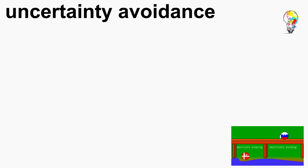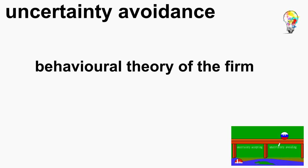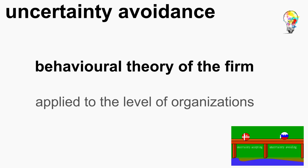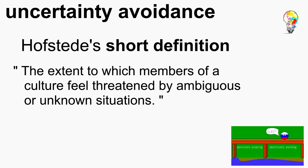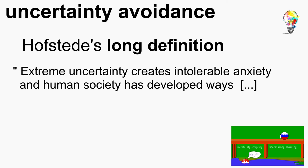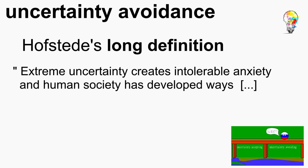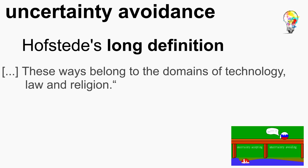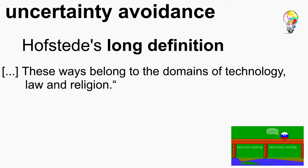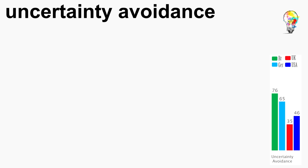Uncertainty avoidance has its origins in the behavioral theory of the firm by Richard Cyert and James March from 1963, which was applied to the level of organizations. Hofstede described the differences between national societies and understands it as the extent to which members of a culture feel threatened by ambiguous or unknown situations. Extreme uncertainty creates intolerable anxiety, and human society has developed ways to cope with the inherent uncertainty of living on the brink of an uncertain future. These ways belong to the domains of technology, law and religion. Importantly, this is not risk avoidance in general — it only refers to risks taken when they represent a known variable.